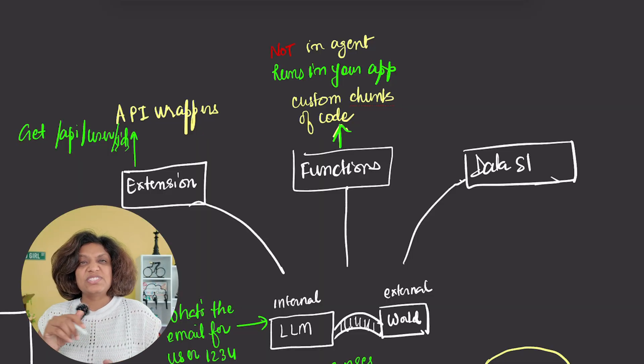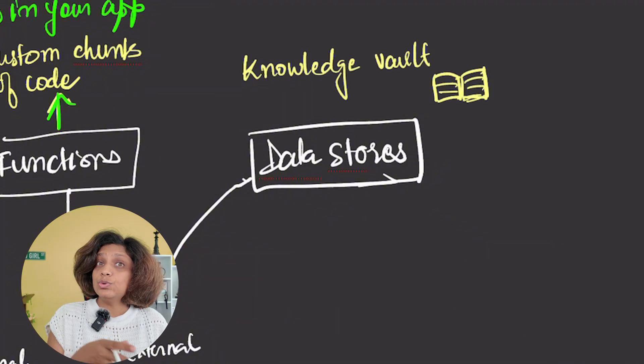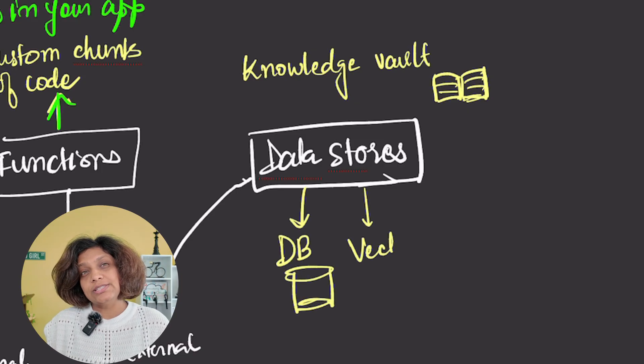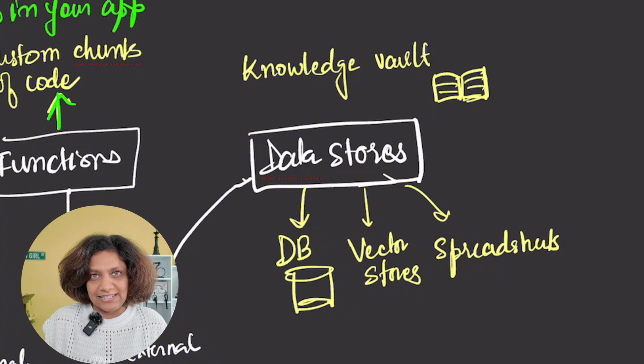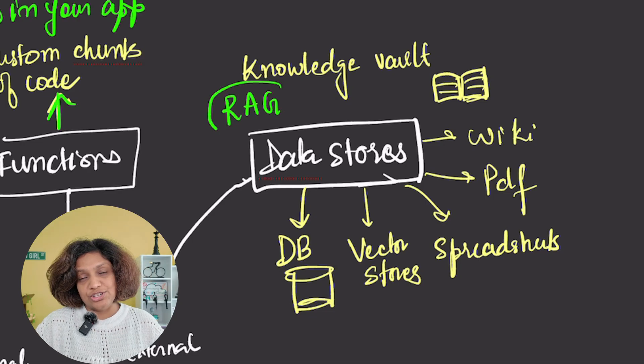The third tool is data stores. Think of this as your agent's knowledge vault and memory system. You connect your agent to databases, vector stores, spreadsheets, PDFs, internal wikis, any existing data sources that your organization has. This enables retrieval augmented generation or RAG. The agent can exactly pull back the information that it needs to stay accurate and current. Here's an example. A customer service agent which accesses your orders in the database. When someone asks, where's my order? The agent retrieves the exact real-time shipping information from your database.